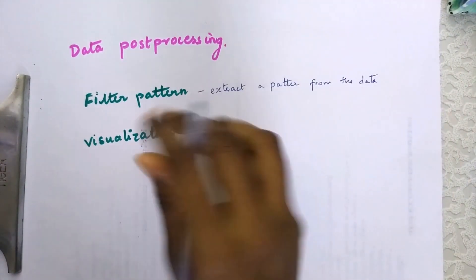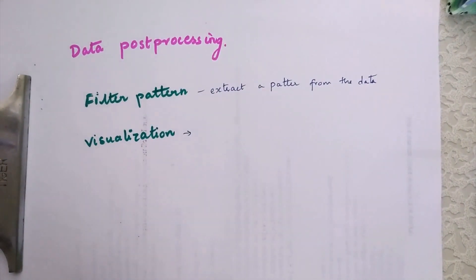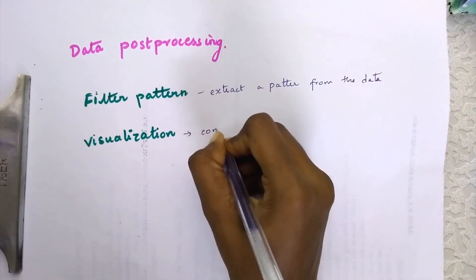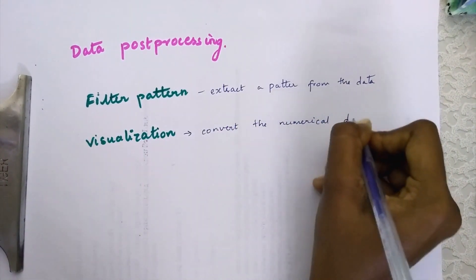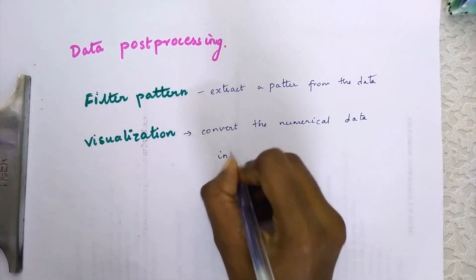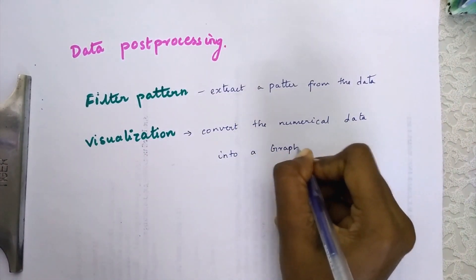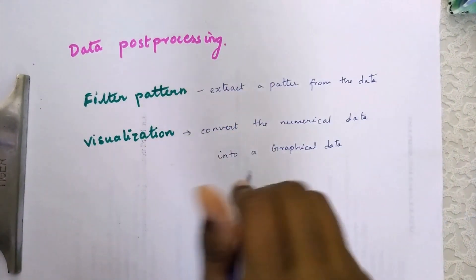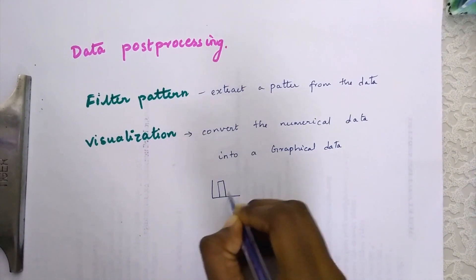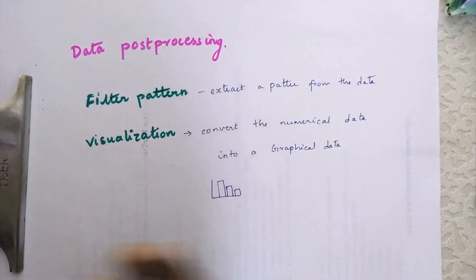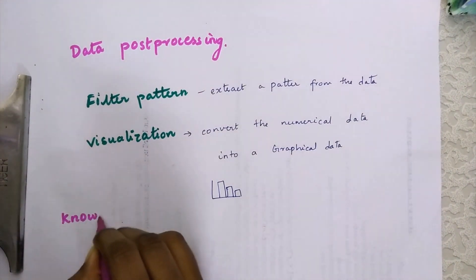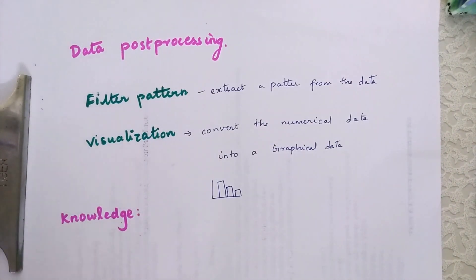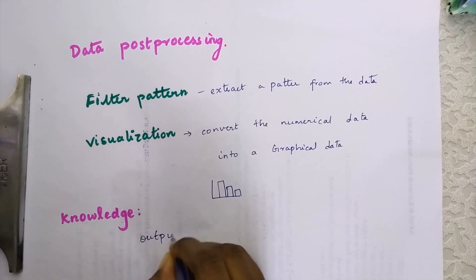Visualization means we are going to see the data in another format or another view. We convert the numerical data into graphical data and see it in a graphical view — for example, using charts or graphs.